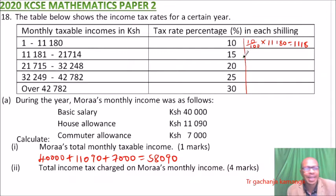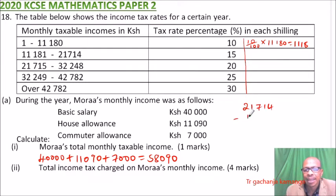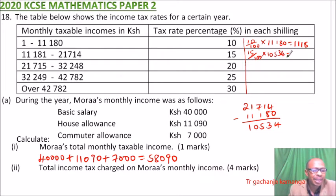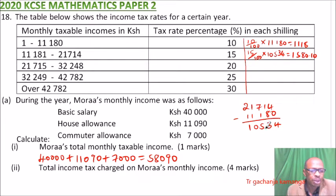For the second bracket at 15 percent: take 21,714 minus 11,180 to get the band width of 10,534. Then 15 divided by 100 multiplied by 10,534. Using your calculator, you get 1,580 and 10 cents. That is the tax for the second bracket.